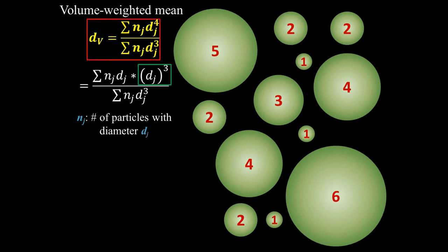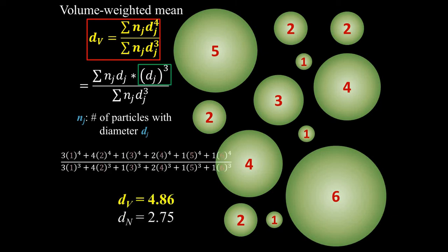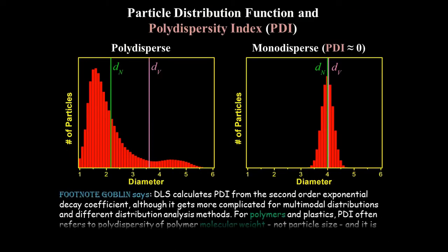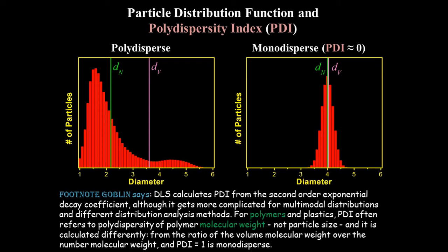Formally, the equation looks like this, where nj is the number of particles with diameter dj. Note that the volume average is always larger than the number average because dv is biased towards larger particles. The difference between the two numbers can be indicative of how broad the particle size distribution is.